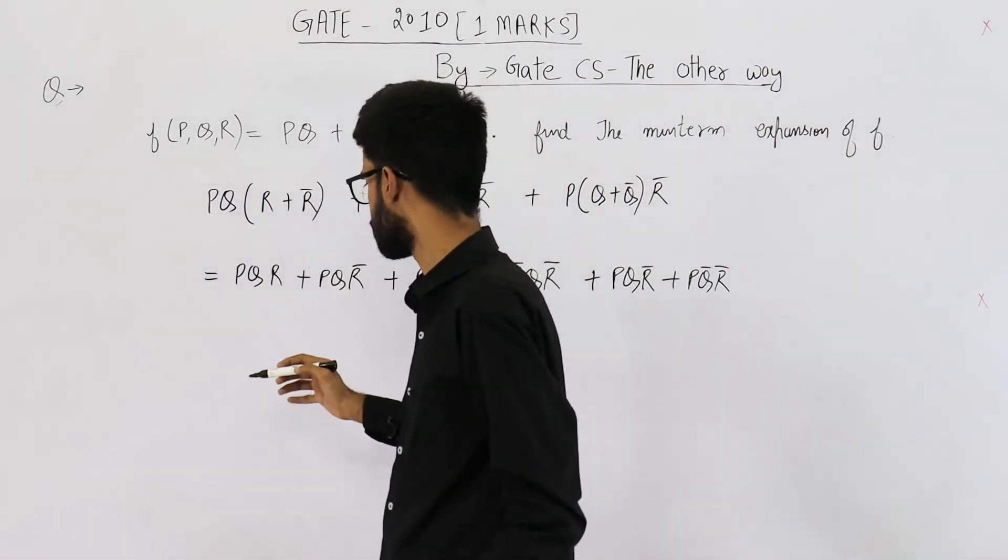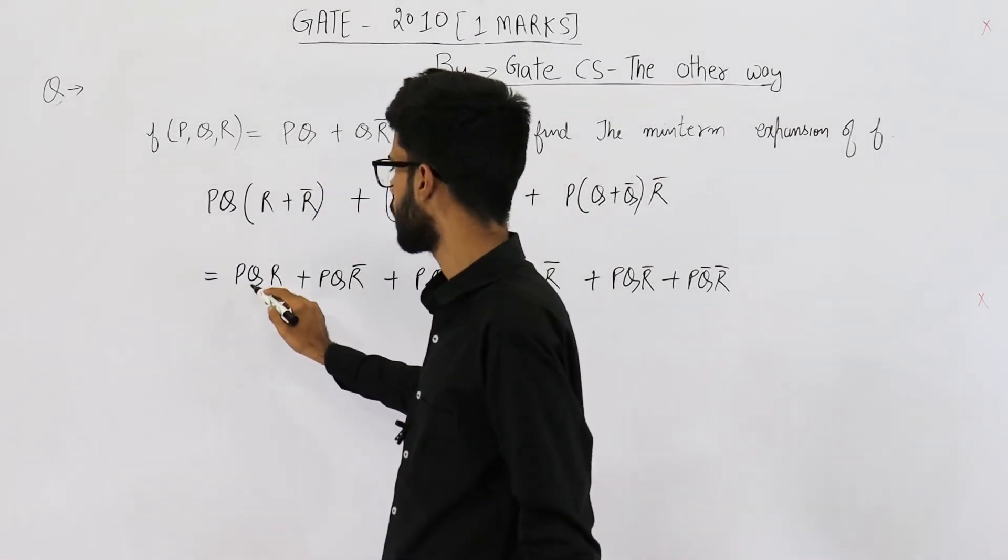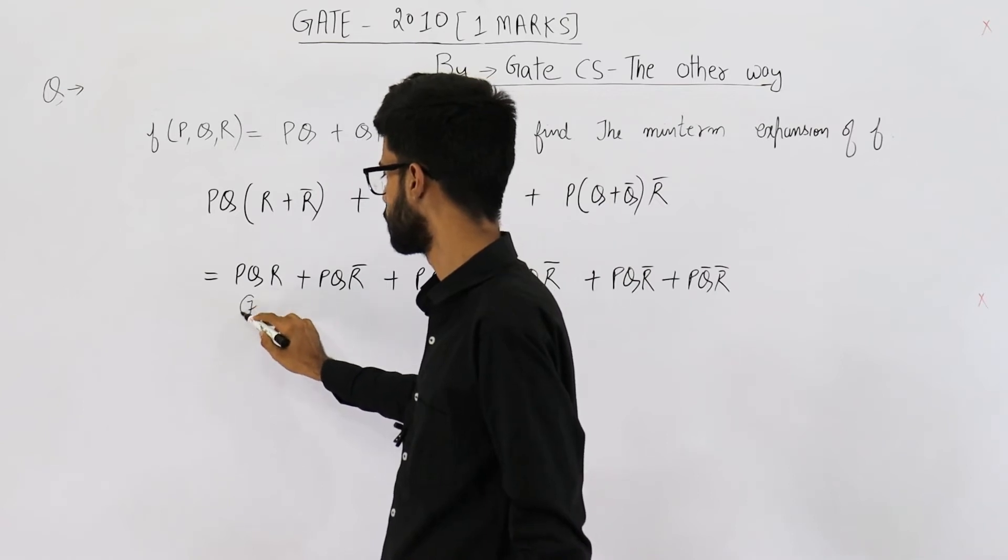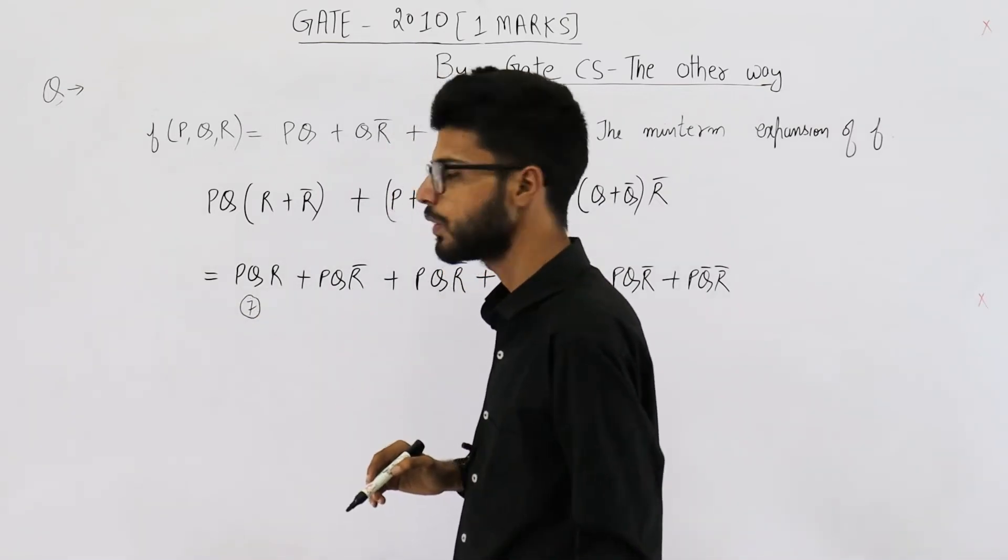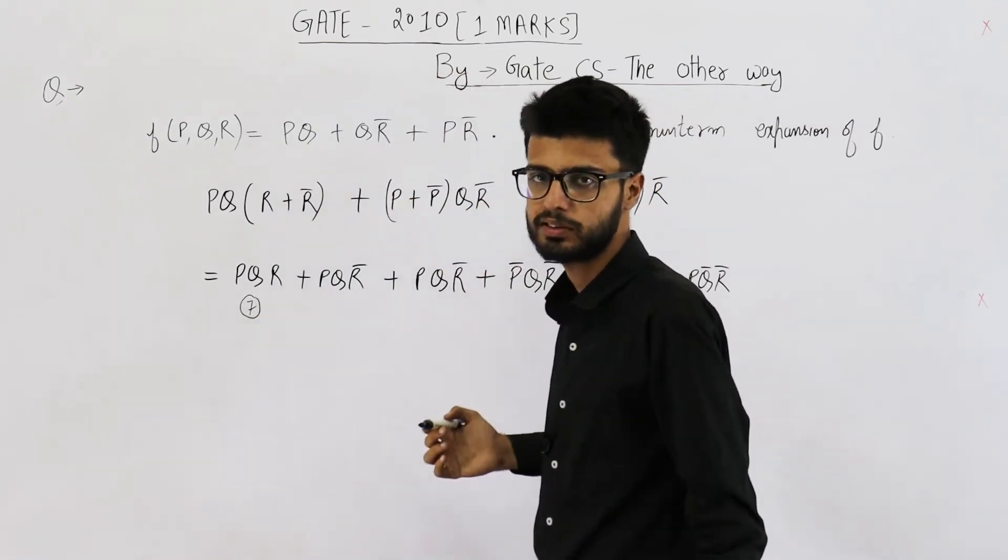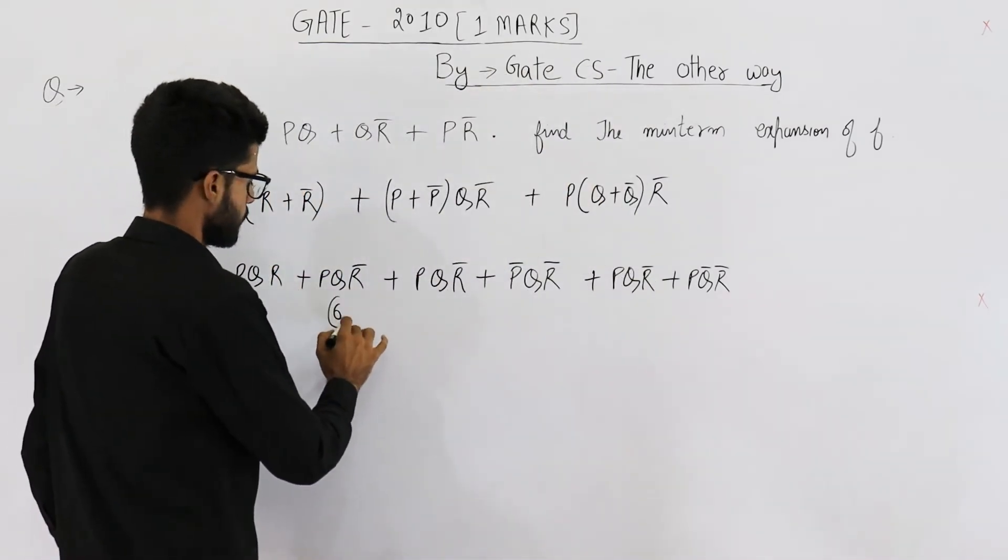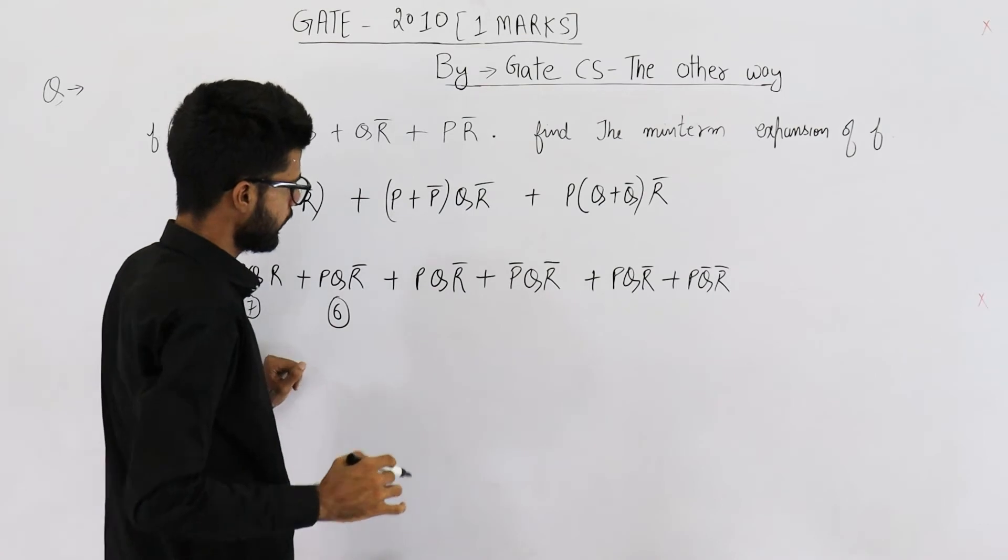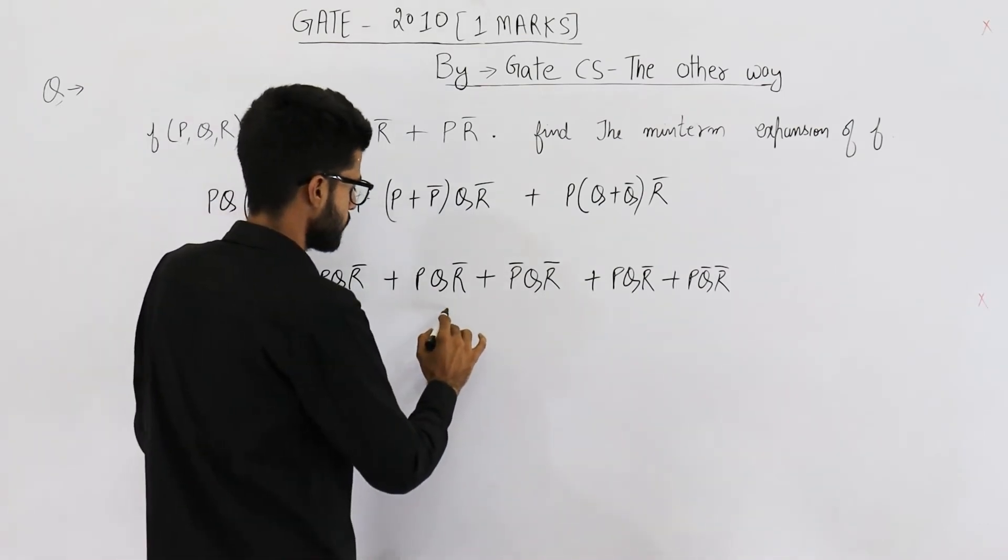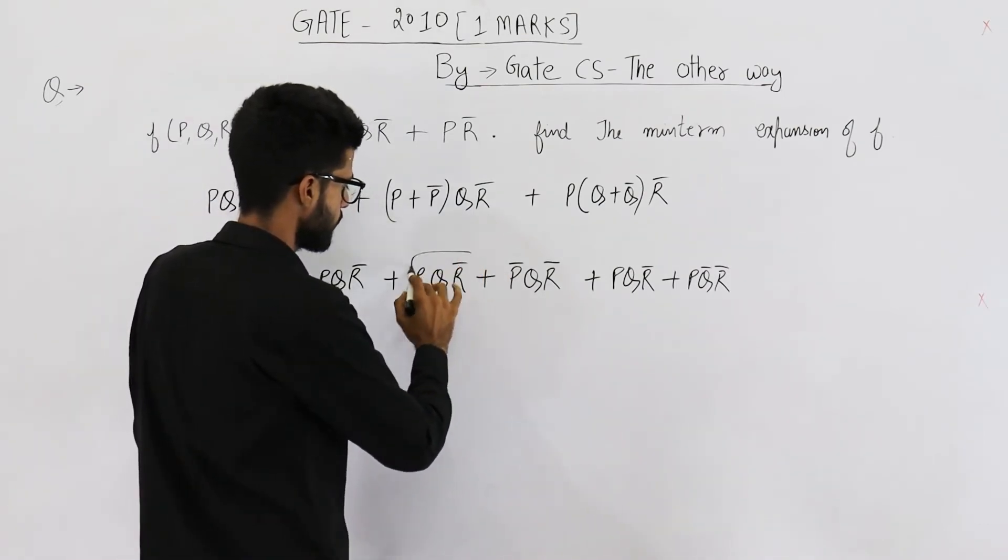Let us identify the inputs. For this one input will be one one one which is seven. For this one you can see the input will be one one zero. This is six. For this one again the input is one one zero it is six. This is repetition.